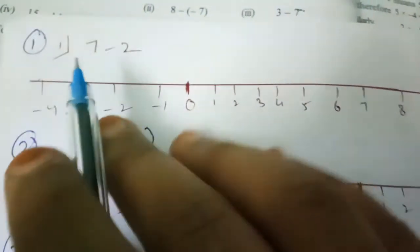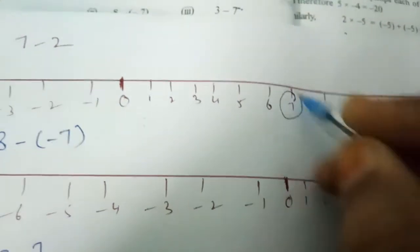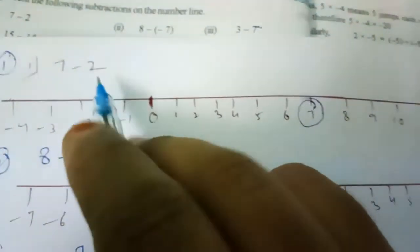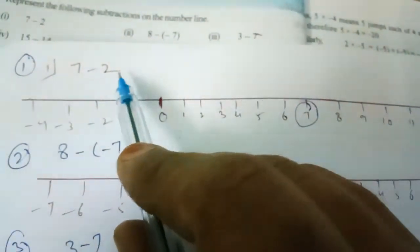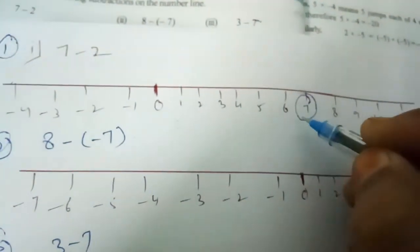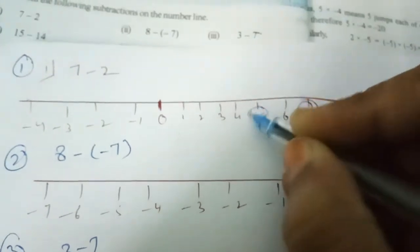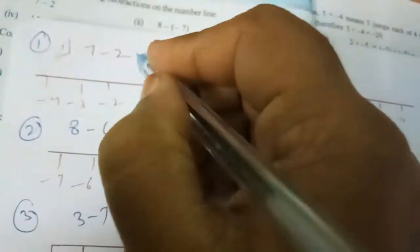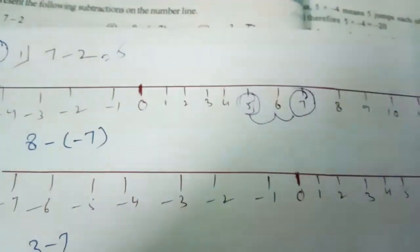So 7 — where is positive 7? Here is the 7. Minus 2: whenever we subtract, we move to the left. So how many times do we move? 2 times — 1, 2. So 5 is your answer. 7 minus 2 equals 5.